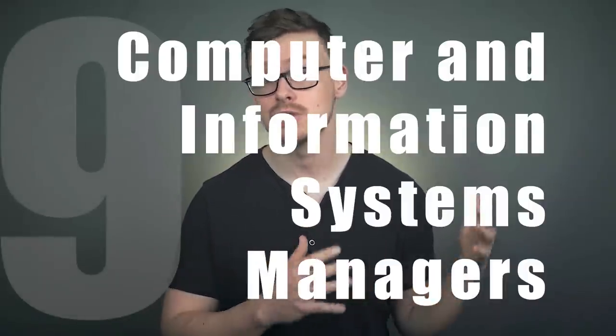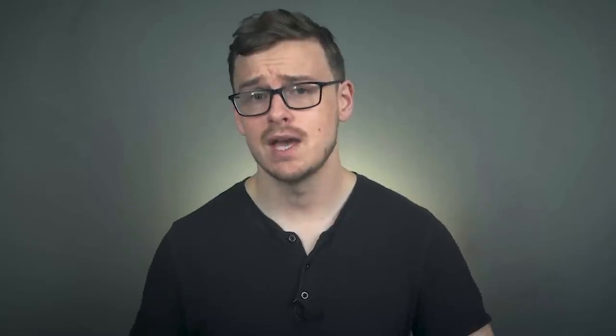Next one on the list, number nine, is going to be computer and information systems managers. This one is projected to have about 48,000 positions open up in the next 10 years and you're gonna make around $146,000 a year.